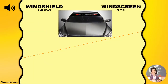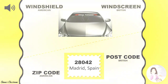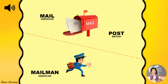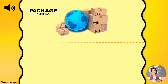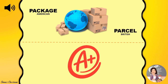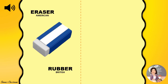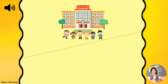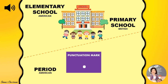Windshield / Windscreen. Zip code / Postcode. Mail / Post. Mailman / Postman. Package / Parcel. A grade / A mark. Eraser / Rubber. Schedule / Timetable. Elementary school / Primary school. Period / Full stop.